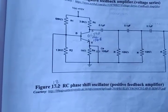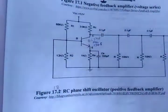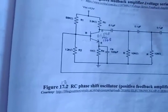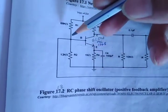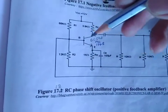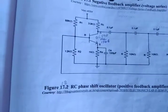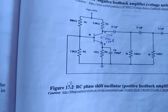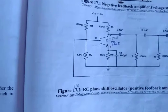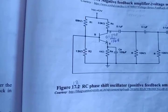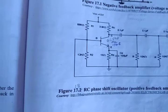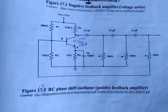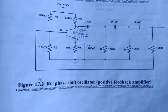If the feedback signal is applied in phase with the input signal, it is called positive feedback, or it is also called regenerative or direct feedback. With positive feedback it increases the gain of the amplifier, but it produces excessive distortion, which is a drawback. Positive feedback is generally used in oscillators, not for amplifiers.